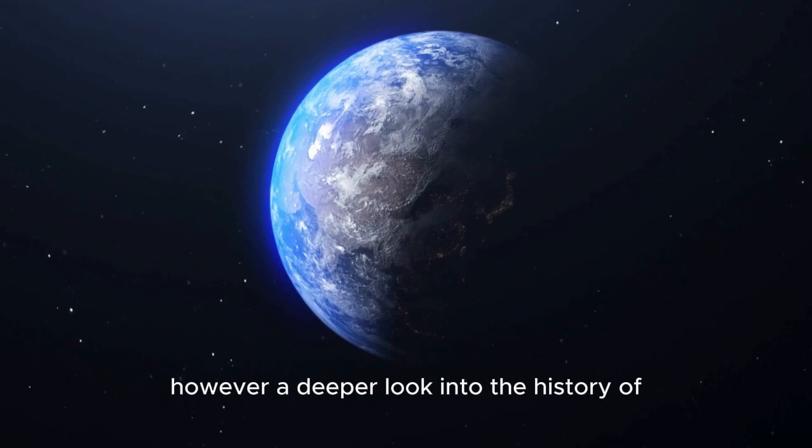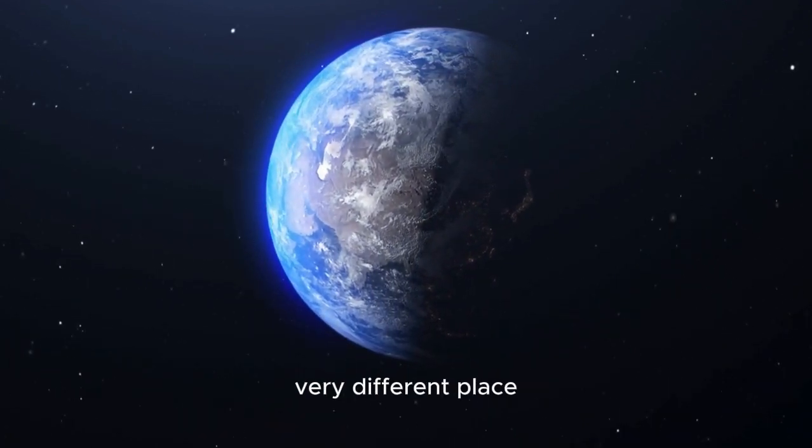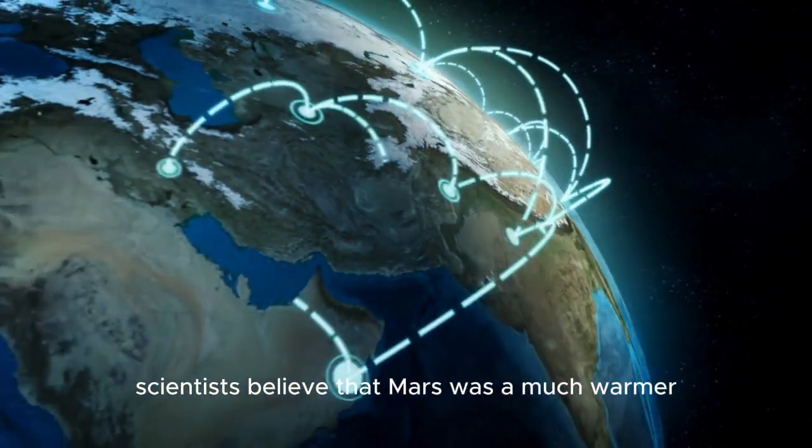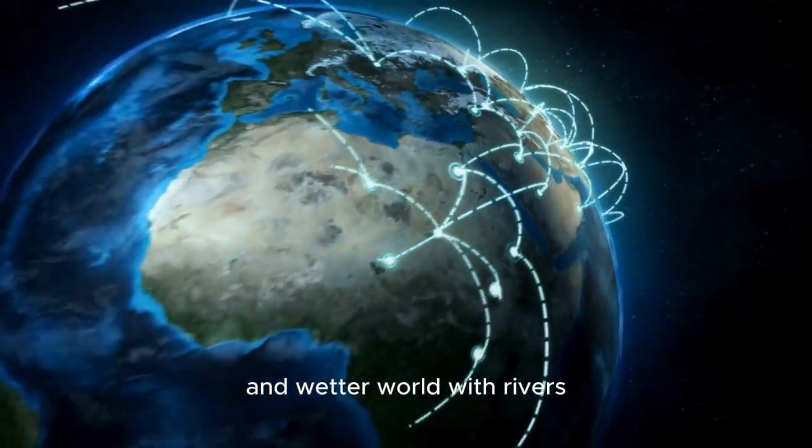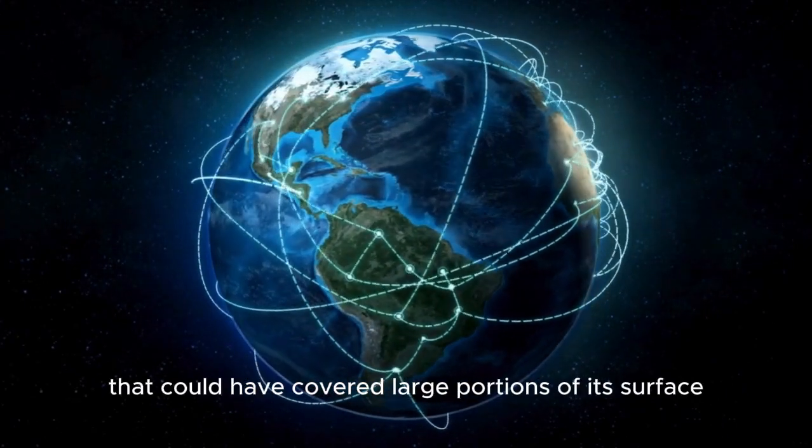However, a deeper look into the history of the red planet reveals that it may have once been a very different place. Around 3 billion years ago, scientists believe that Mars was a much warmer and wetter world, with rivers, lakes, and even oceans that could have covered large portions of its surface.